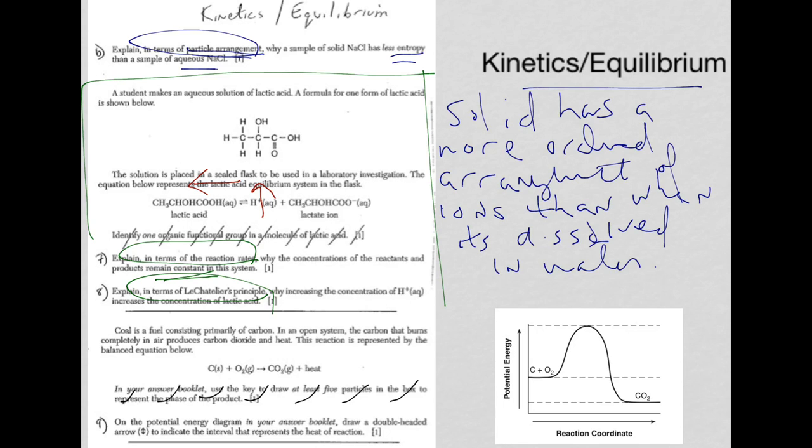Here we have again information above about coal and question nine is asking on the potential energy diagram which I put here. Draw a double headed arrow to indicate the interval that represents the heat of reaction. Okay remember heat of reaction is your delta H and your delta H is the energy of the product in this case minus the energy of the reactants.